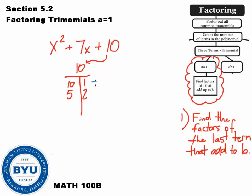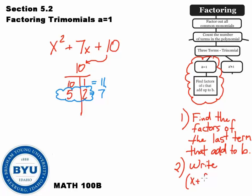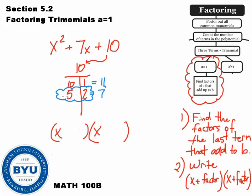If I add 10 and 1, that's 11. If I add 5 and 2, that's 7 — and that's what we're looking for. So I circle those factors. The last step, step number 2, is to write the factoring out: parenthesis x plus the first factor, close parenthesis, open parenthesis, x plus the second factor. So our final answer is x plus 5, and x plus 2. That's the process — just find the factors of c that add to b.